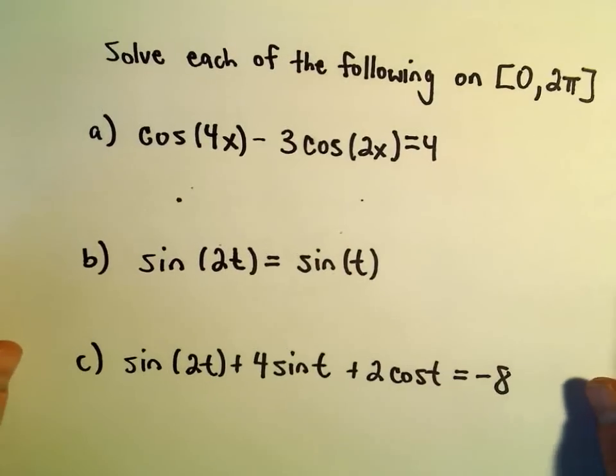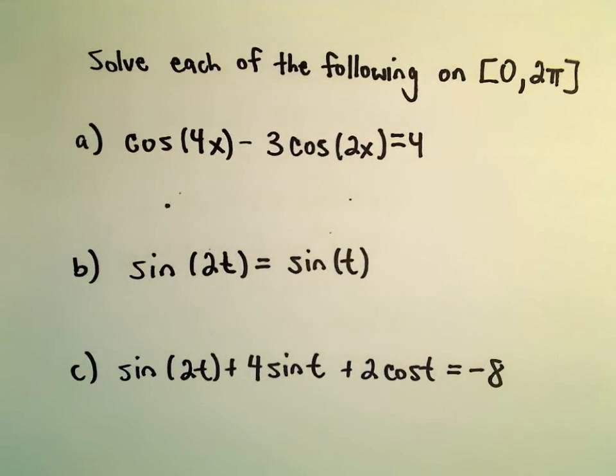So in this case, I'm going to solve, we'll do part A here. We're going to solve cosine of 4x minus 3 cosine of 2x equals 4.